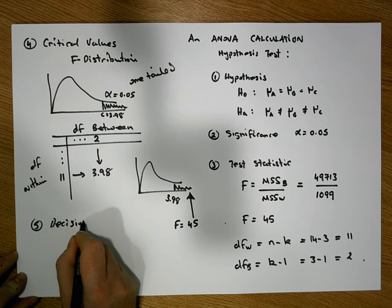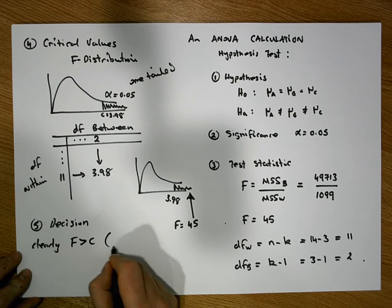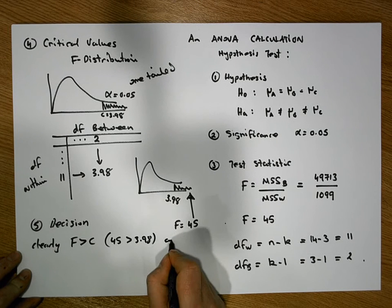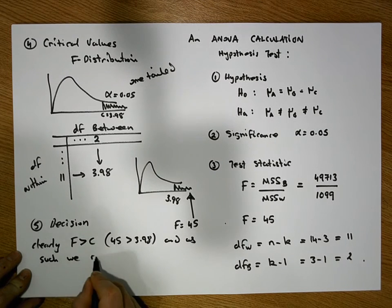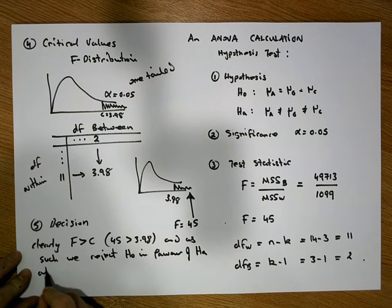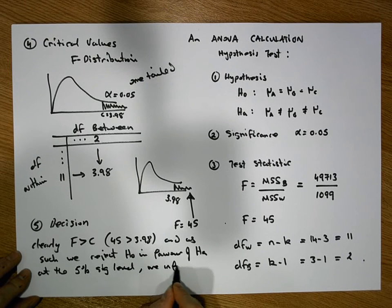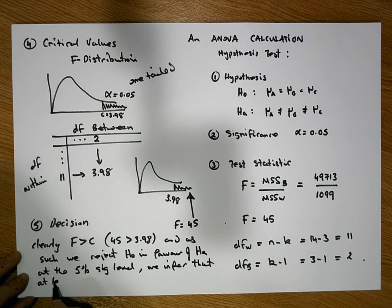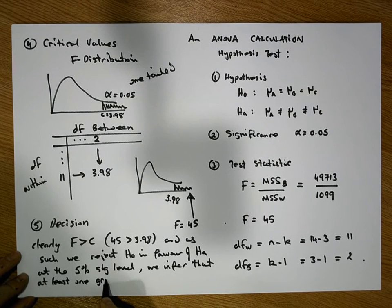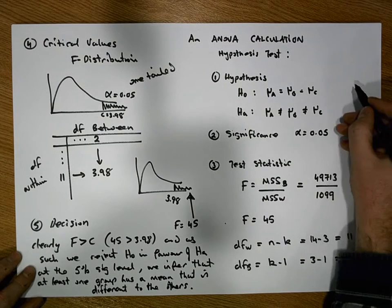Step five is our decision. Our F statistic of 45 is clearly bigger than our critical value of 3.98, and as such we reject H0 in favor of HA at the five percent significance level. We infer that at least one group has a mean that is different to the others, and we're 95% confident about that.